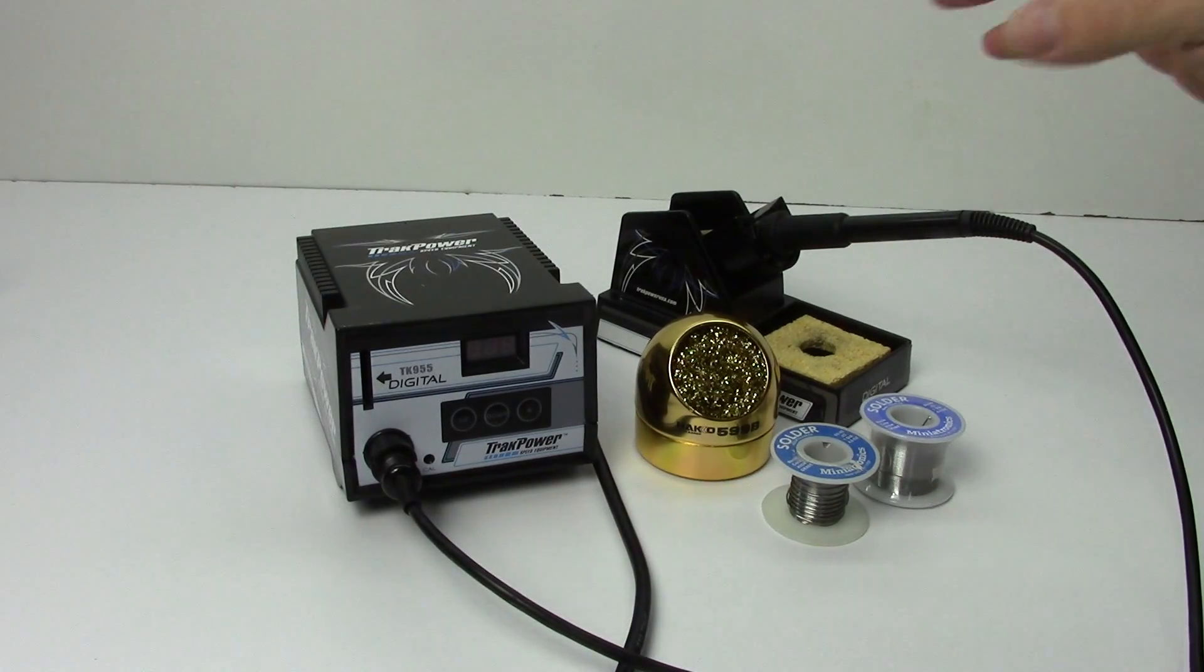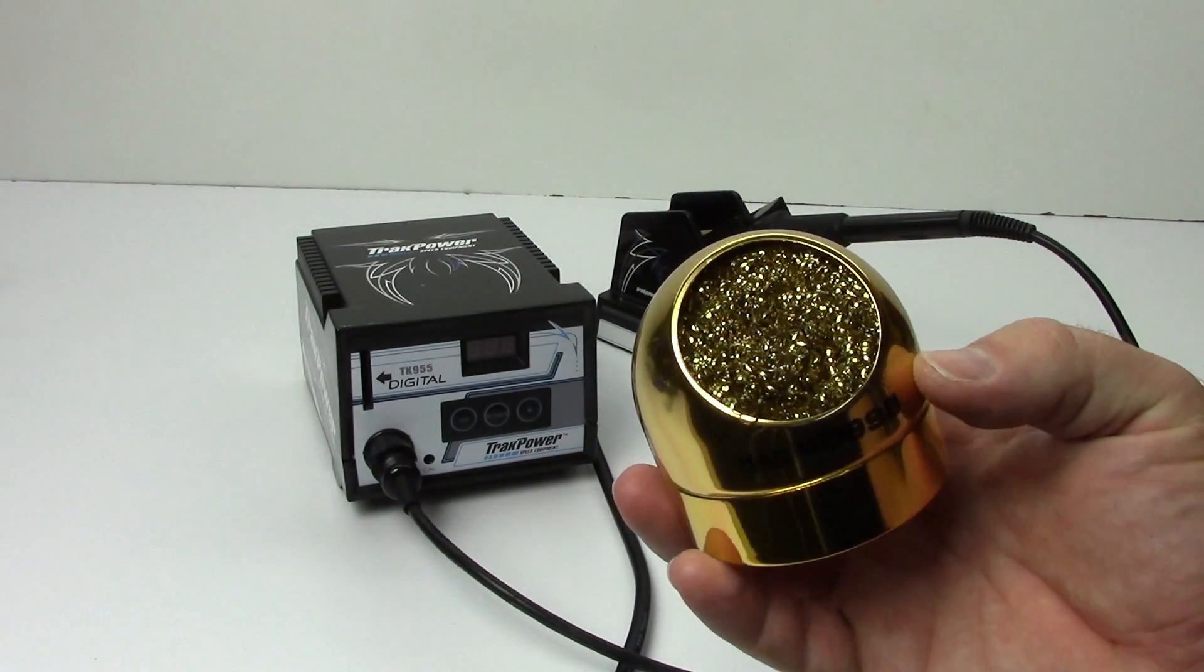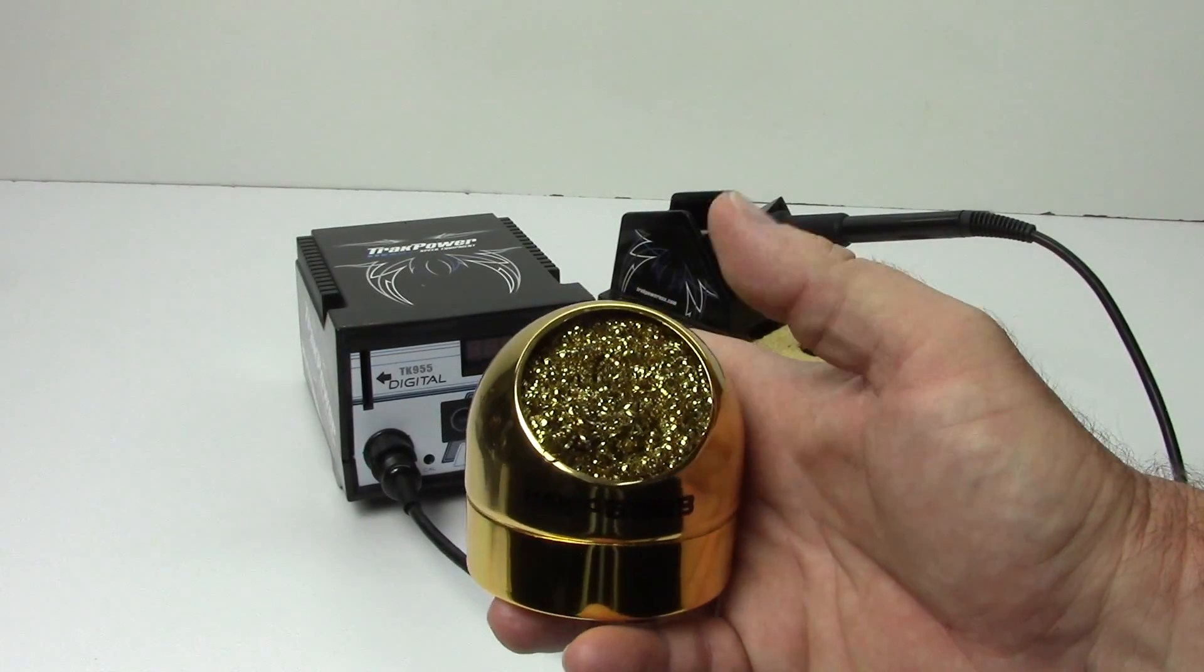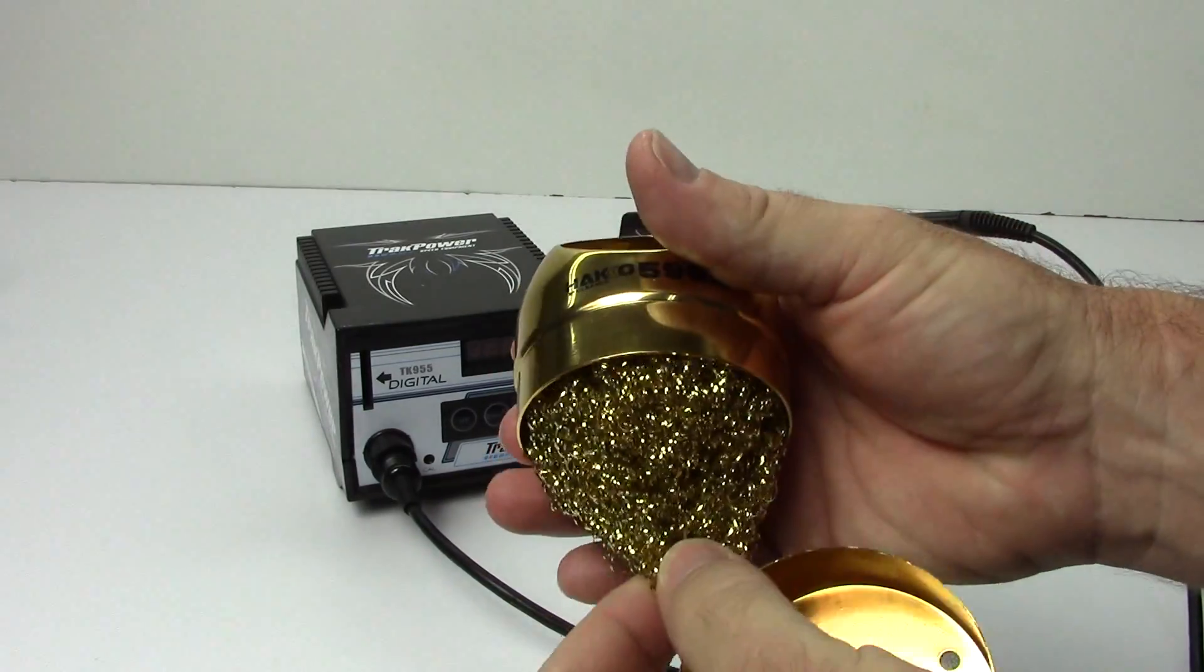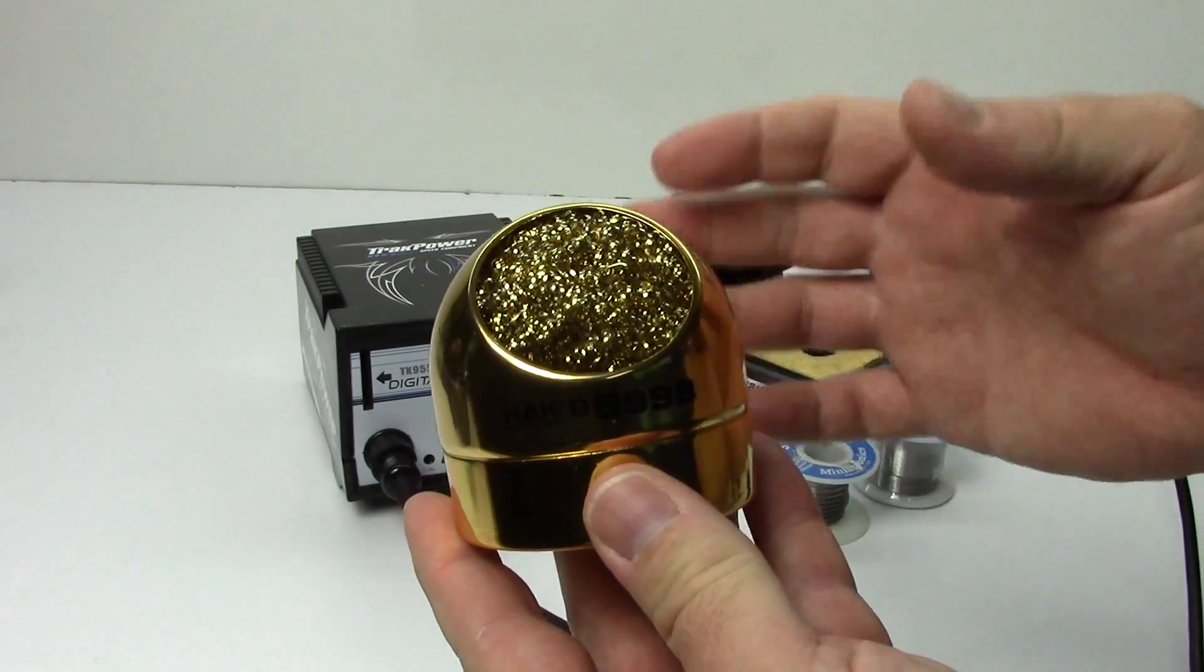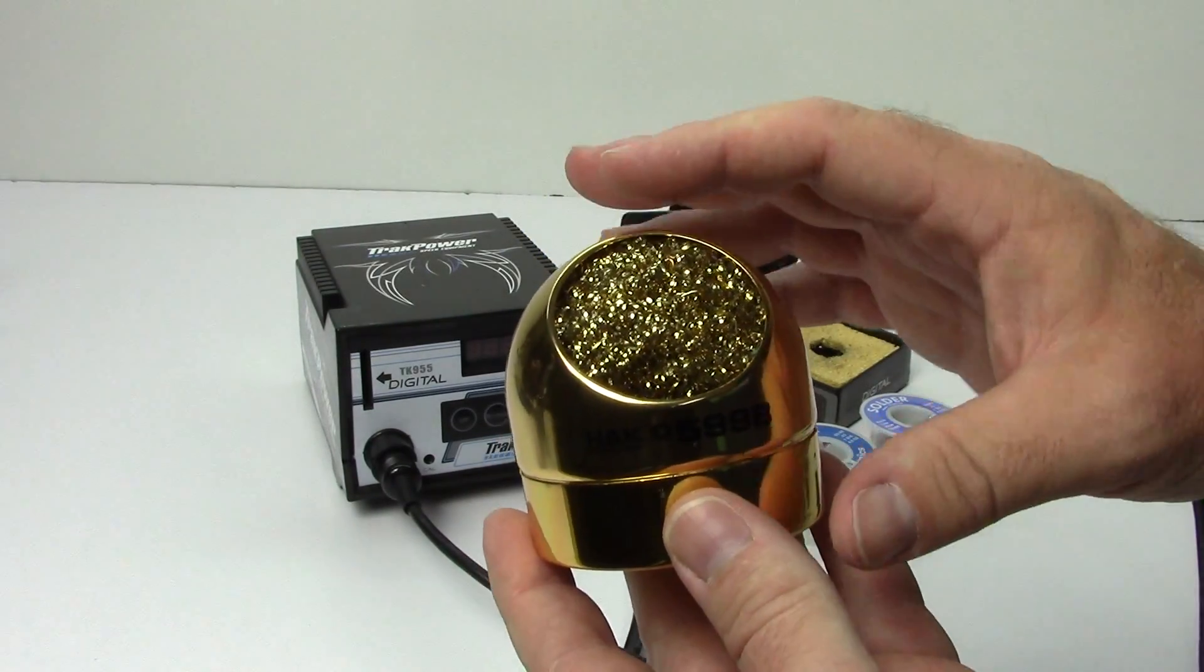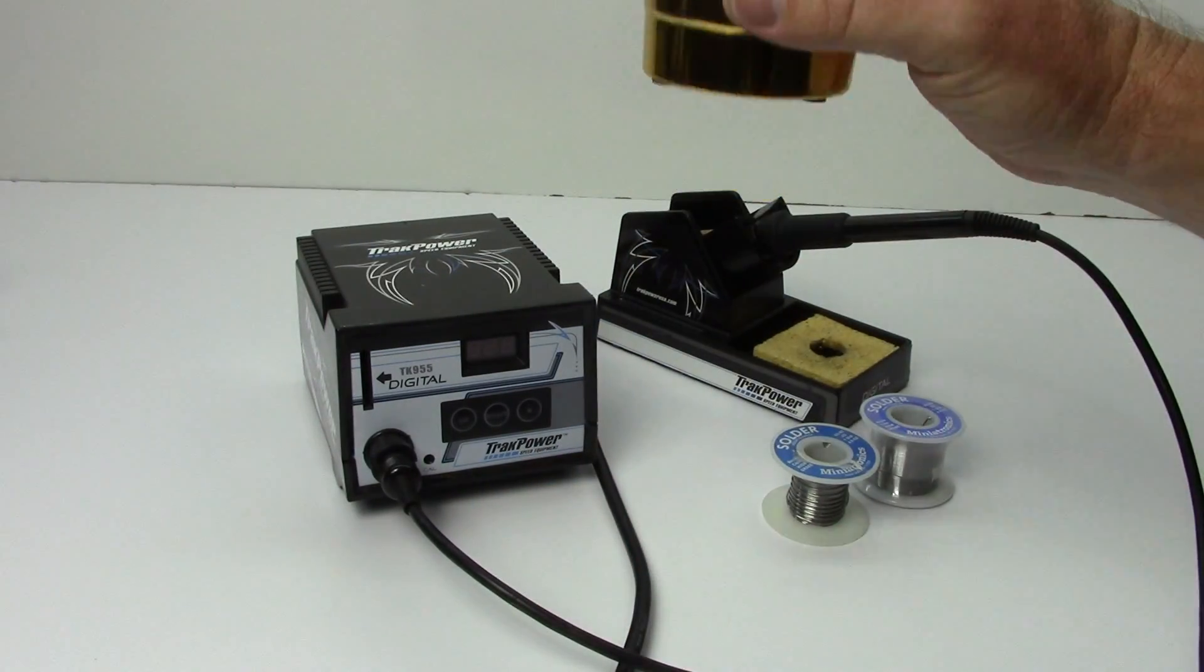Another item that I picked up is this Heiko 599B, this is a tip cleaner and I had a lot of guys recommend this when I was doing the original review of this 955 and I've got to say this thing is really nice. It's simple, kind of like a brass sponge in there, really soft to the touch and it really cleans the tip of the soldering iron great. A lot better than this wet sponge that came with the 955. Great little item, I think it was 12-13 bucks if I can remember right. I'll have a link to this in the video description.